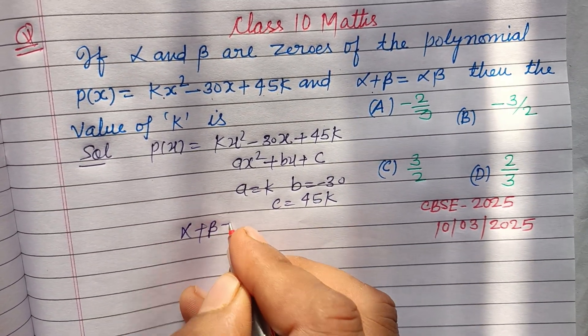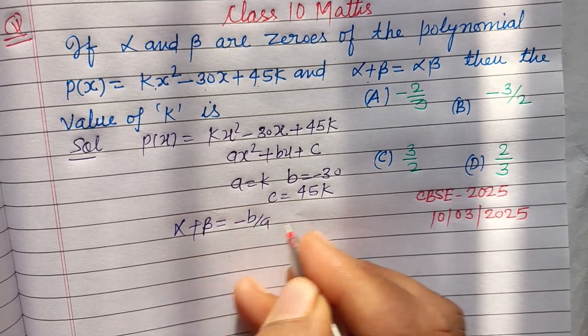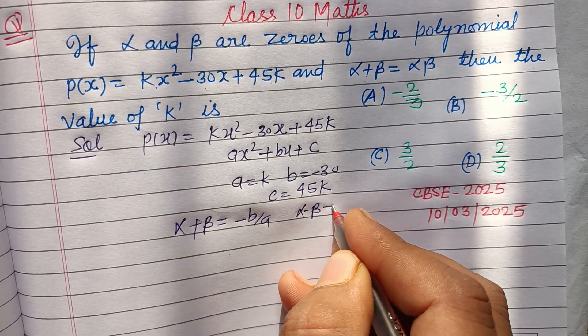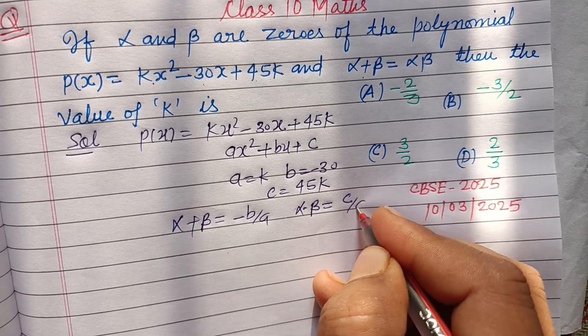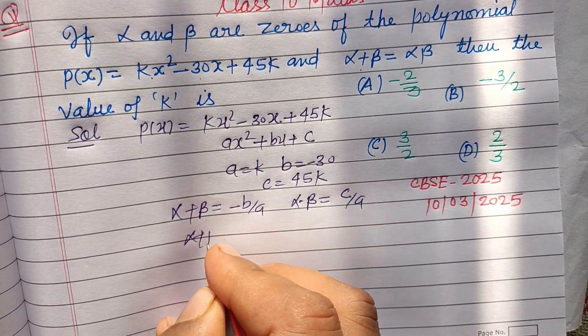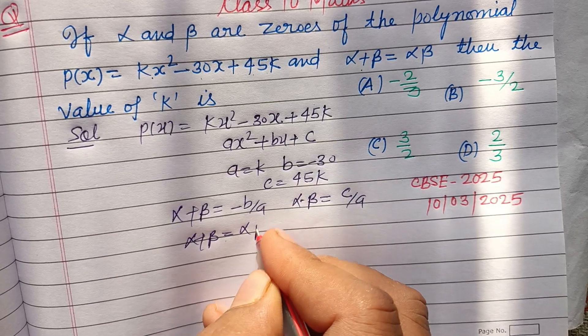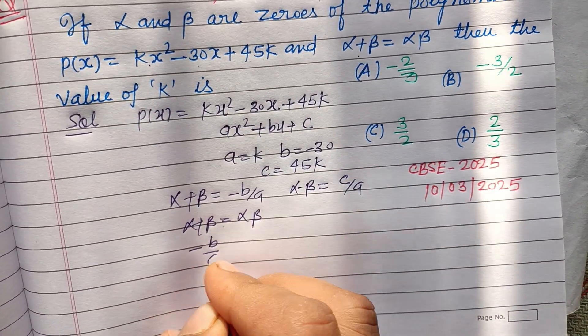You know that sum of zeros is -b/a and product of zeros is c/a. It is given to us that α + β = αβ, so -b/a = c/a.